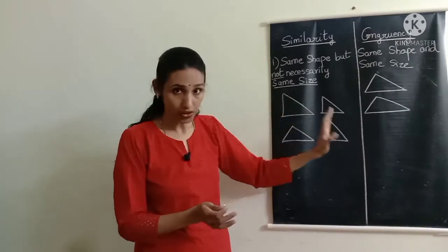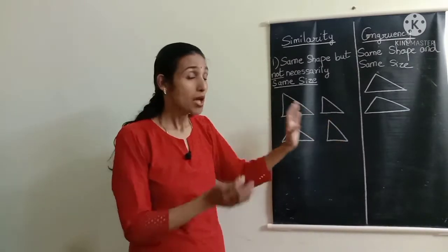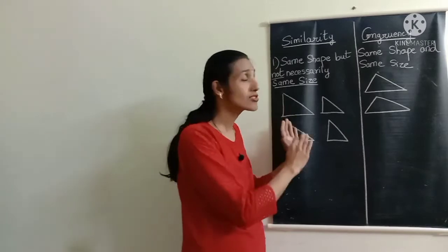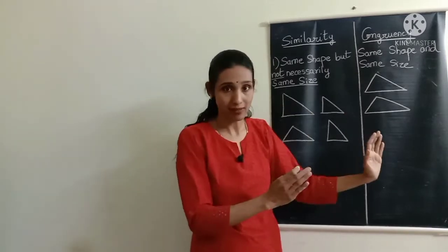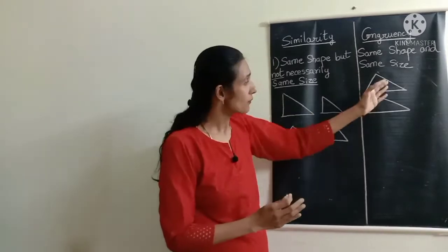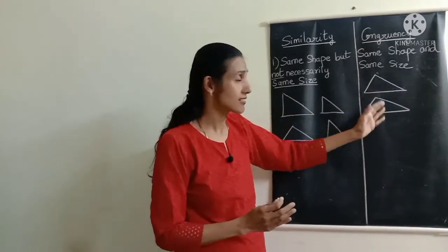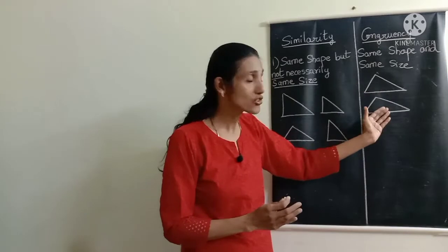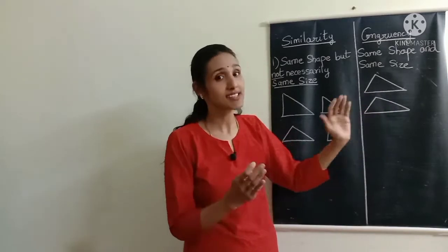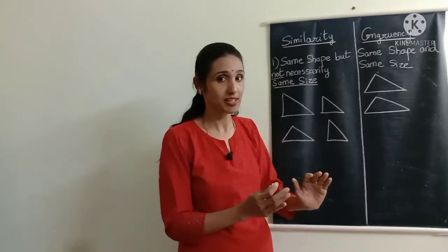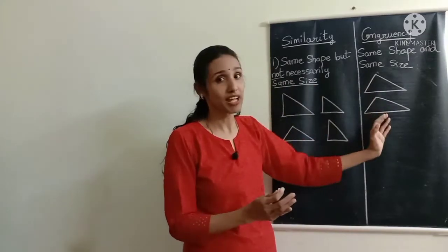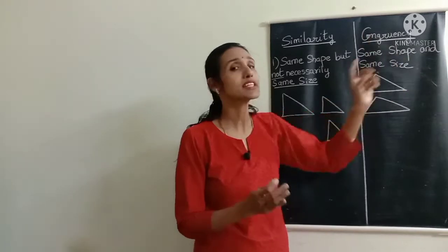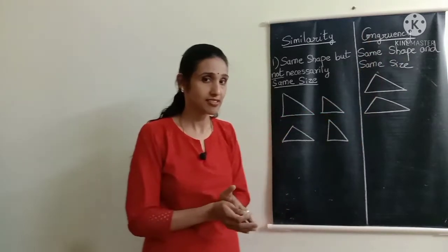Now the sizes of similar figures are not the same — but what if the sizes also become the same? When both the shape and the size are the same, those similar triangles become congruent triangles.